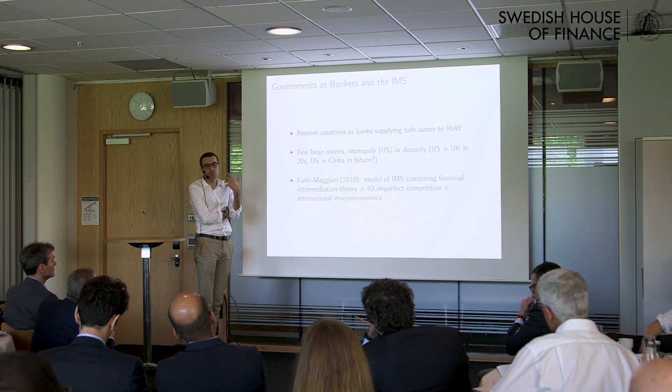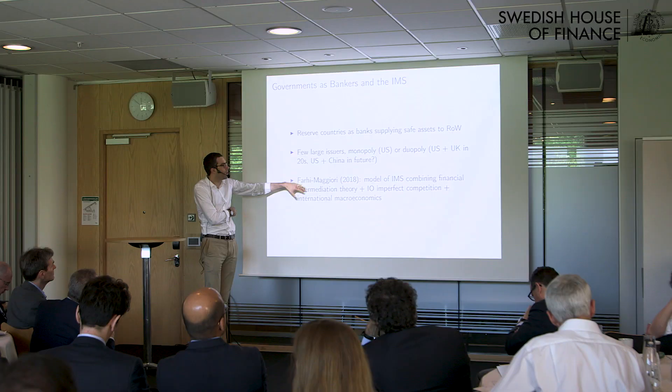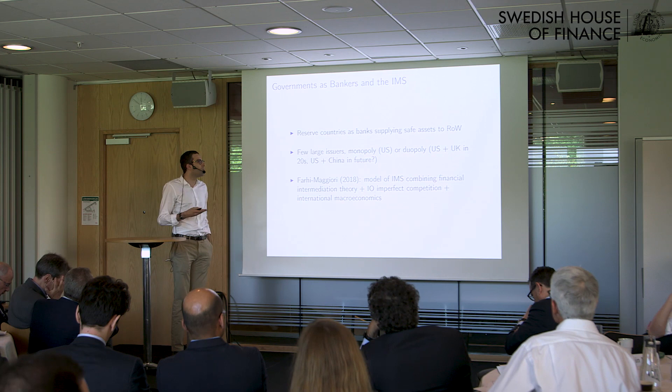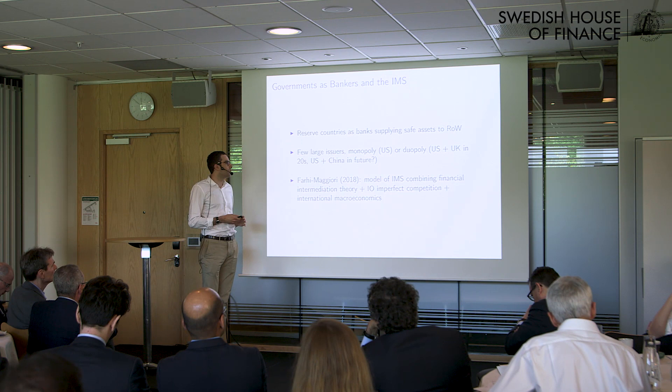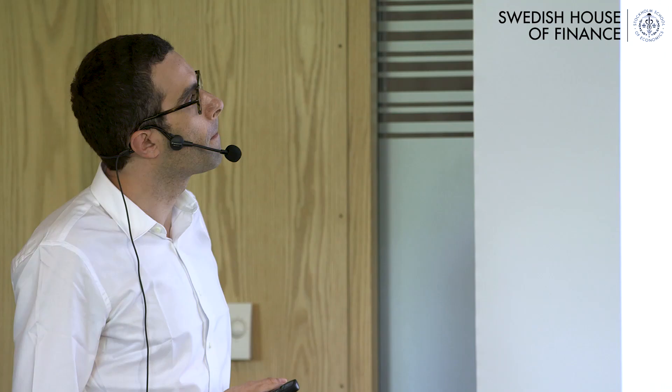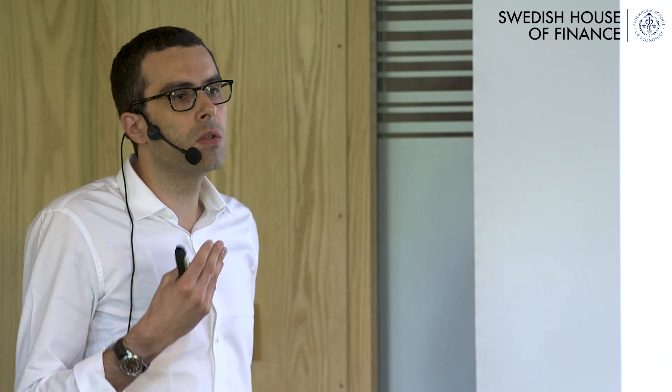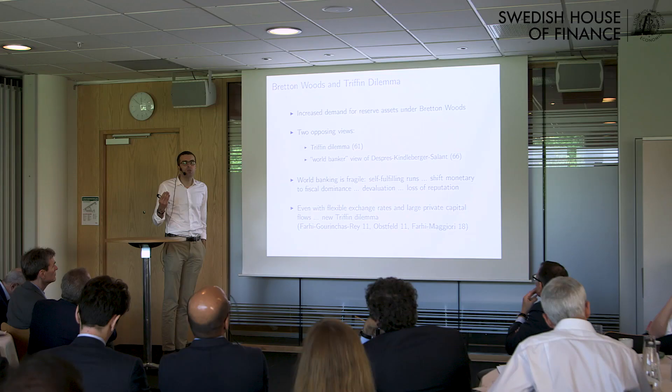There have been situations of duopoly in the past, like the US and UK in the 1920s, or perhaps the US and China in the future. I have a recent paper that fleshes out this analogy by proposing a model of the international monetary system that combines financial intermediation theory, industrial organization, and international macroeconomics. To understand the connection, it's useful to go back to the Bretton Woods era and the Triffin Dilemma.